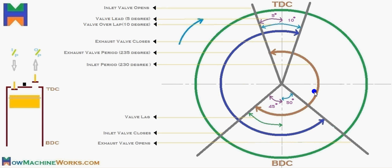The inlet period is 230 degrees. You can see this brown line — the semicircle showing the inlet period. It starts from the dashed line, and you can see the inlet valve opens 5 degrees before the top dead centre.